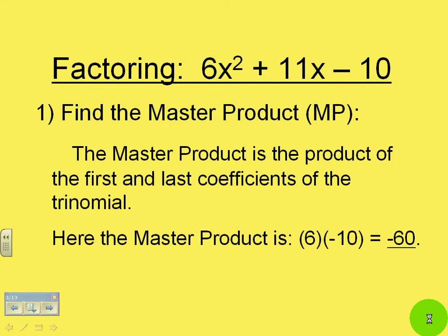The first step in factoring the trinomial is to find something called the master product. The master product is the product of the first and the last coefficients of the trinomial. So here the master product is 6 times negative 10 or negative 60.